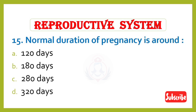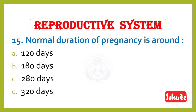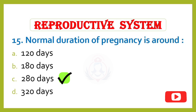Question 15. Normal duration of pregnancy is around: Option A – 120 days, Option B – 180 days, Option C – 280 days, Option D – 320 days. Correct answer is Option C: 280 days.